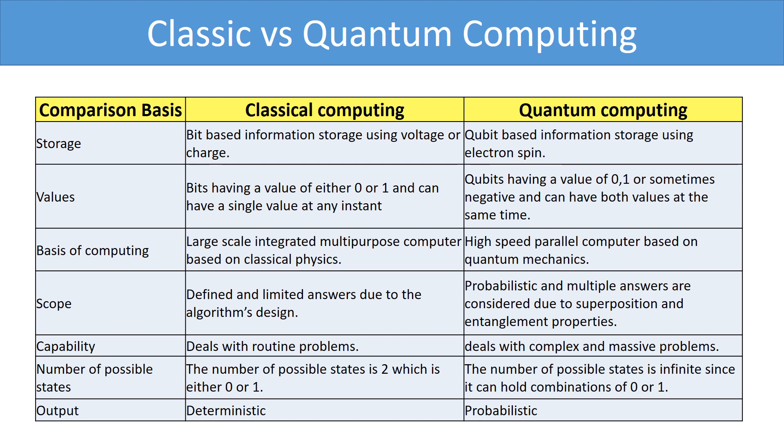Classic computers deal with routine problems whereas quantum computers deal with complex and massive problems. In classic computers, the number of possible states is 2 which is either 0 or 1. Whereas in quantum computers the number of possible states is infinite since it can hold combinations of 0 or 1. Classic computers are deterministic whereas quantum computers are probabilistic. What it means is, in classic computers, repetition of computation on the same input gives the same output so deterministic whereas in quantum computers, repetition of computation gives probabilistic answers so probabilistic.